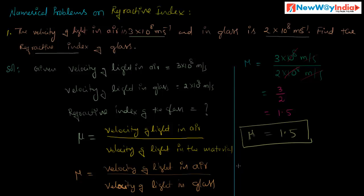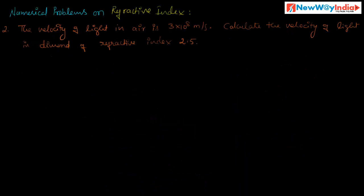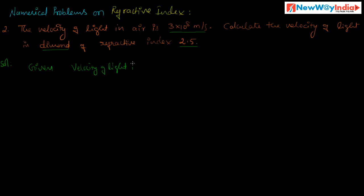Next problem: the velocity of light in air is 3×10⁸ meter per second. Calculate the velocity of light in diamond if the refractive index of diamond is 2.5. Here the refractive index is given and we have to find the velocity of light in diamond. Given: velocity of light in air is 3×10⁸ m/s, and refractive index of diamond is 2.5.